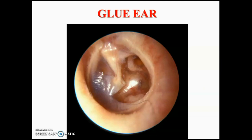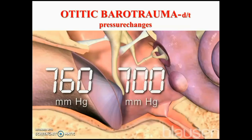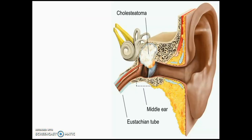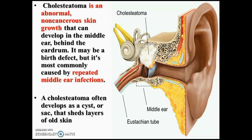Coming to the applied aspects: glue ear is a condition where the tympanic cavity is filled with viscous fluid and the patient may present with earache, ear tugging, and conductive deafness. It can be drained by passing a tube through the tympanic membrane via myringotomy. Otitic barotrauma happens due to pressure changes in skydivers or scuba divers. It may involve the inner ear and patients usually present with dizziness, vertigo, tinnitus, and deafness. Cholesteatoma is an abnormal non-cancerous skin growth that can develop in the middle ear, most commonly caused by repeated middle ear infection. It presents as a cyst sac showing old layers of skin and may require surgical intervention, with patients presenting with earache, conductive hearing loss, and dizziness.